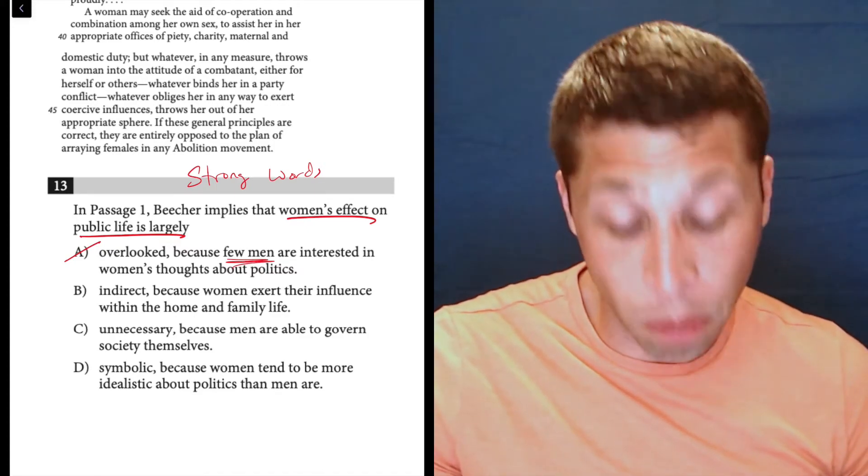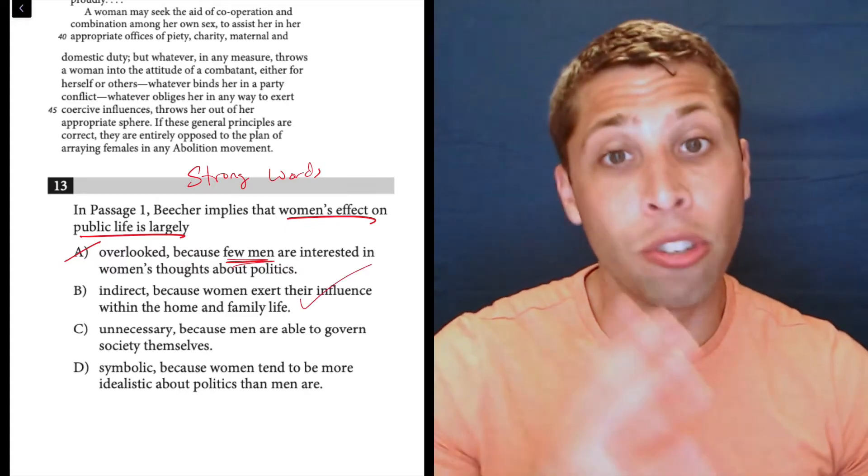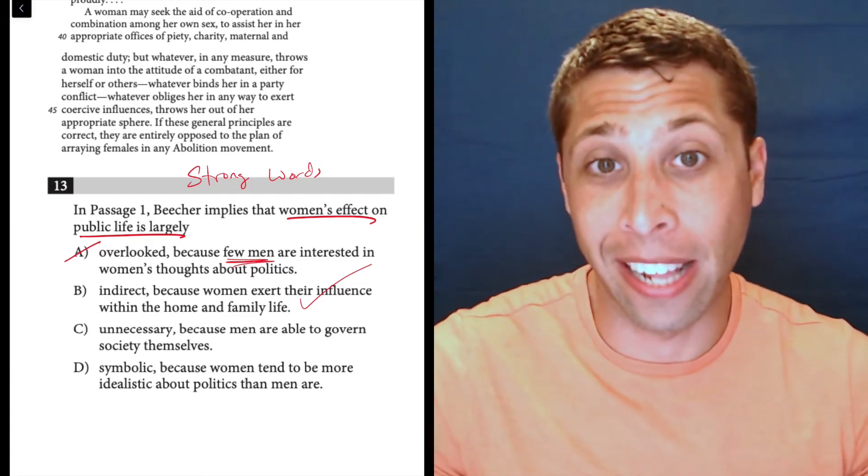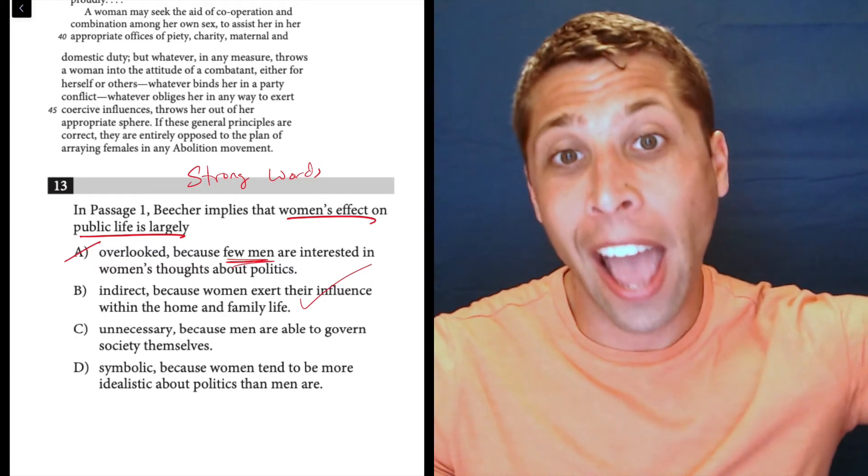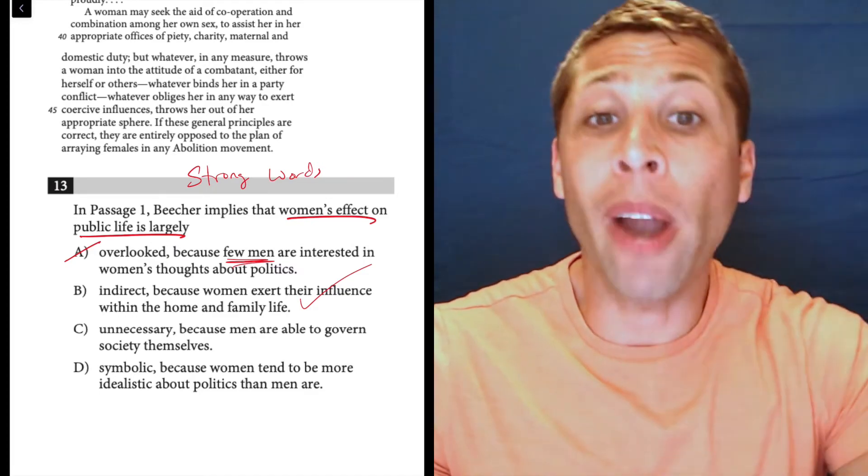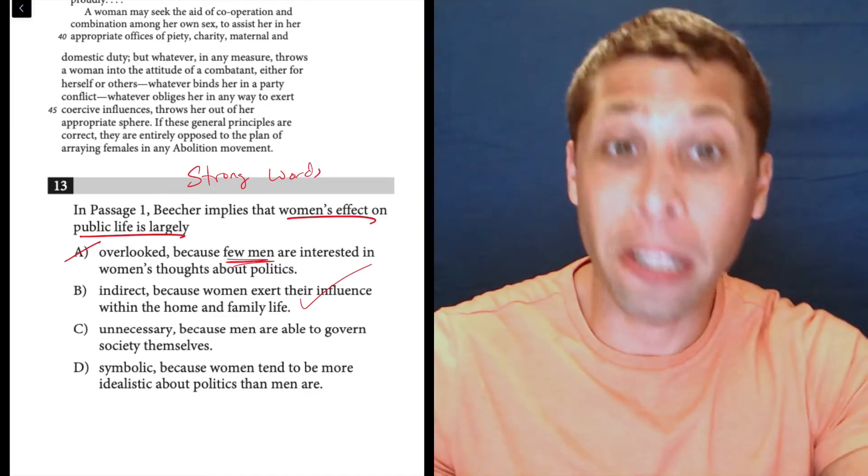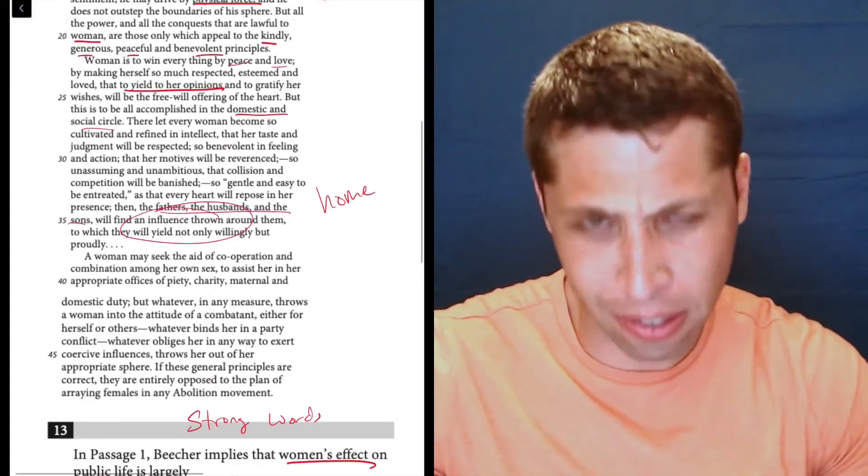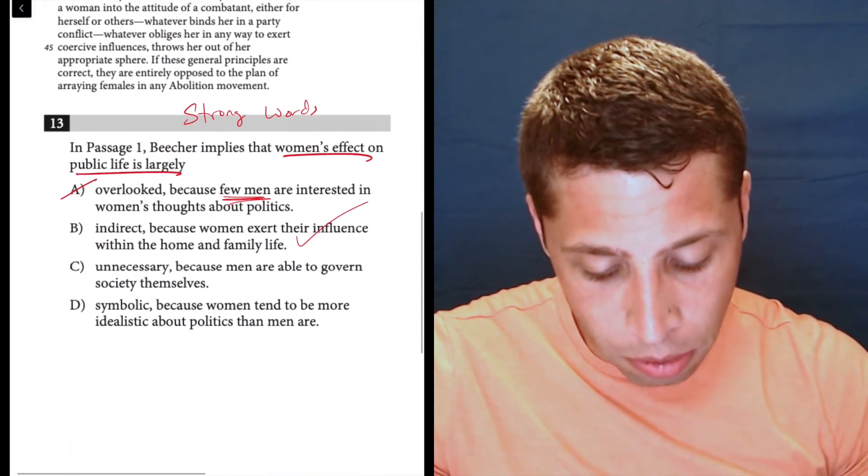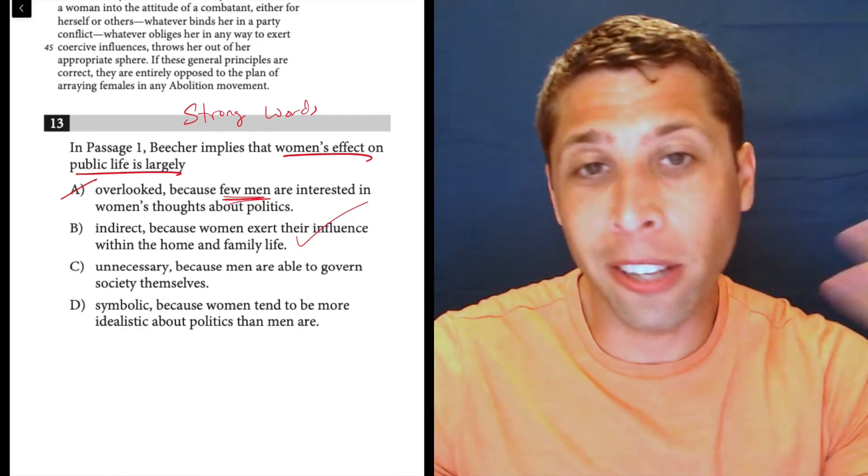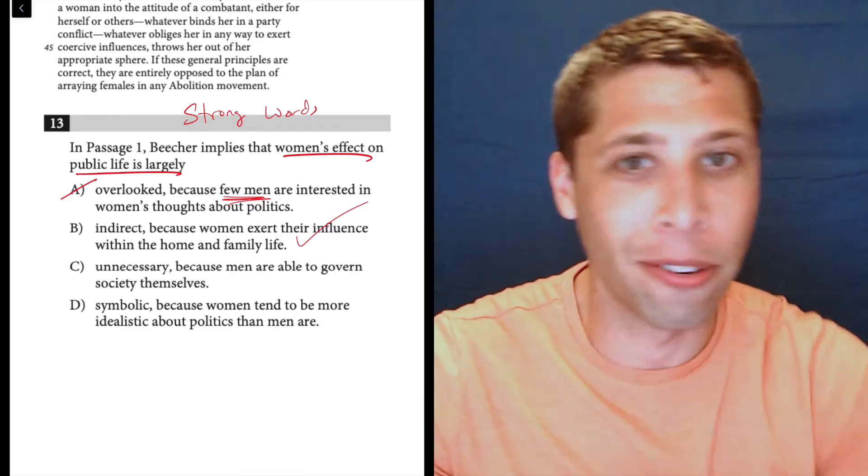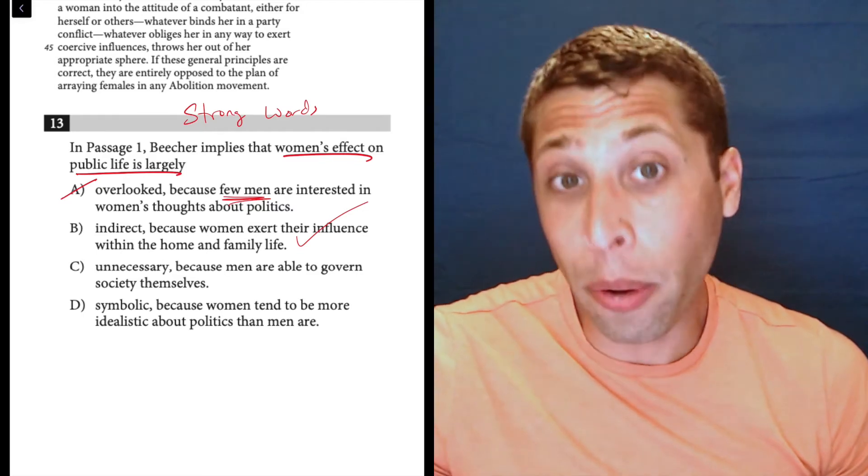Indirect because women exert their influence within the home and family life. Well, the second part is absolutely true. She's going on about saying how in the home, she's allowed to act and women are allowed to act. And that's the point. That's the whole thing is that they're not going out in the public and getting people to change their minds. They're doing it in the home. And this is an indirect way of influencing the public debate, right? They're not actually in parliaments debating or in Congress debating. I forget if this is a British person or an American, probably American abolitionism. But they're doing it by kind of like being so awesome at home that their fathers and husbands and sons listen to them and then go out and do what they think. So this is a good choice. Let's keep going, though. Let's make sure.